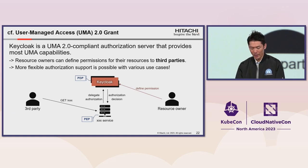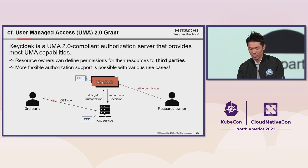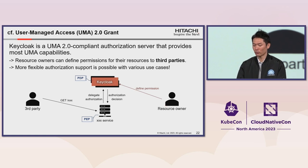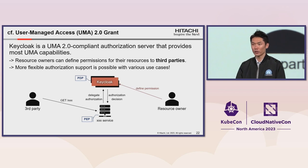For example, one use case is a resource owner wanting to publish their resources to some third-party clients. Another example is a use case where a resource owner wants to change authorization policy dynamically depending on their circumstances. For example, MSO Bank is a UMA 2.0-compliant authorization server that provides most UMA capabilities.